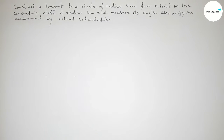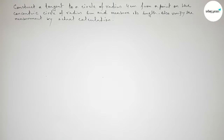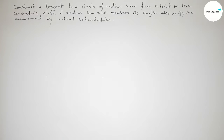Hi everyone, welcome to SISR classes. Today we are doing an important geometrical construction. The question is: construct a tangent to a circle of radius 4 centimeters from a point on a concentric circle of radius 6 centimeters, then measure its length and verify the measurement by actual calculation.